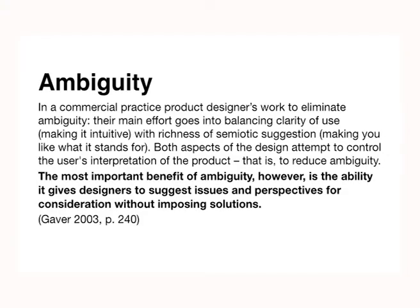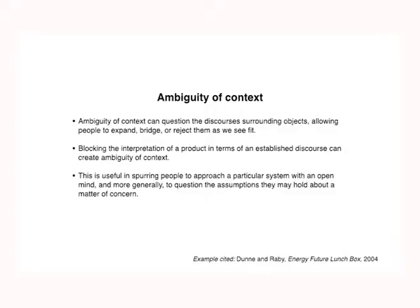What's essential in the examples I've talked about is this notion of ambiguity. In commercial design practice, ambiguity is something we want to eliminate — the effort of the designer goes into balancing clarity of use and reducing interpretation. Bill Gaver, who has written extensively around the concept of ambiguity in design, says: 'The most important benefit of ambiguity is the ability it gives designers to suggest issues and perspectives for consideration without imposing solutions.' I think this might be useful in this context. There are three forms of ambiguity I want to introduce.